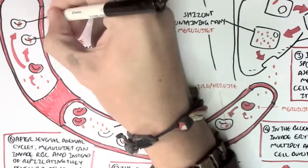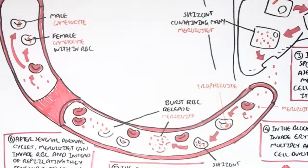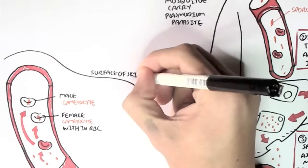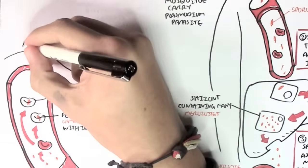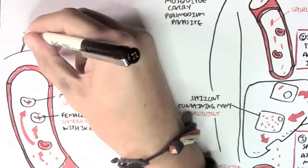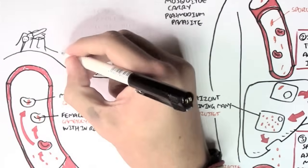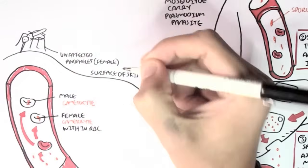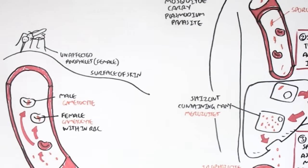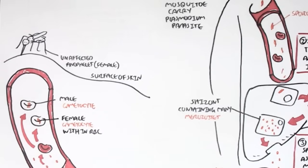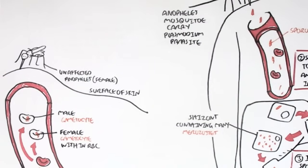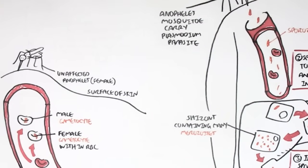So, what do these gametocytes do? Well, they can't really do much in the human body. They require an Anopheles mosquito in order to become a sporozoite, an infective form of the plasmodium species again. So, therefore, if another uninfected Anopheles mosquito comes along, a female, and bites this particular infected human being, it will suck up these gametocytes, the male and the female.